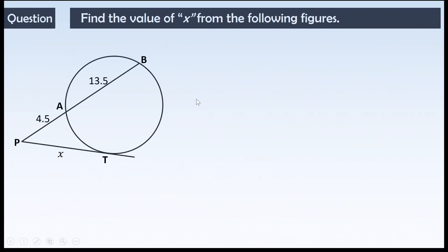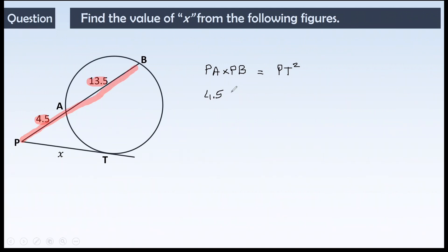Another question based on the third theorem — a chord and a tangent. The theorem says PA into PB equals PT squared. Substituting the values: PA is 4.5, but PB is 4.5 plus 13.5 which equals 18. So 4.5 into 18 equals PT squared. That gives 81 equals PT squared, so the square root of 81 means PT equals 9 units.